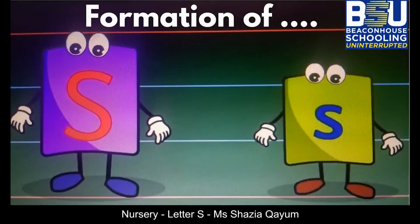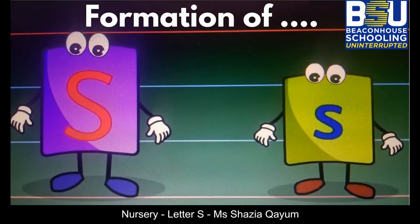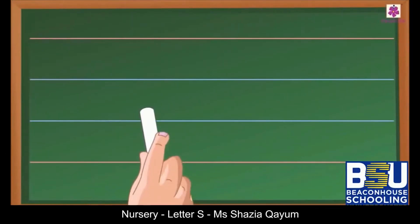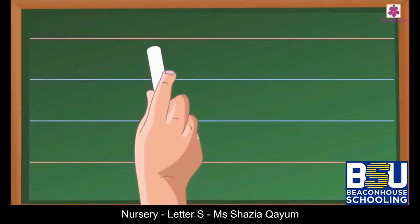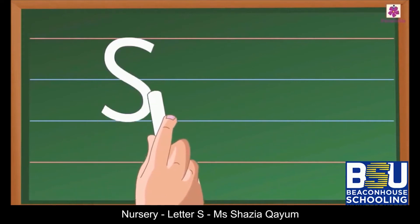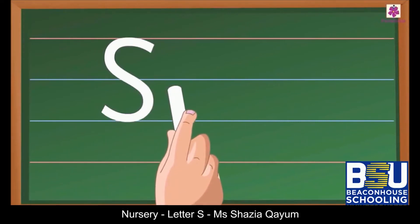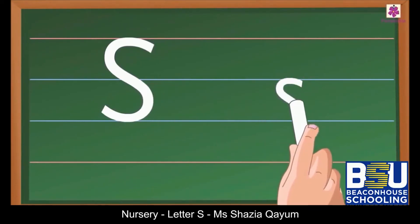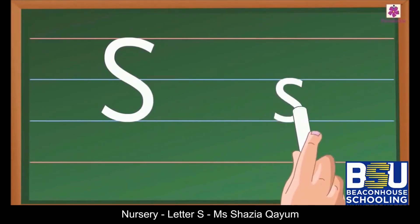Now let's focus on the formation of capital and small letter S. The uppercase S is exactly the same shape as the lowercase S — the only difference is that it is smaller. Capital letter S: start from the skyline, swing to the left and create a curve, then swing to the right and create another backward curve touching the grass line. Small letter S: start from the fence line, swing to the left and create a curve, then swing to the right and create another backward swirl touching the grass line.